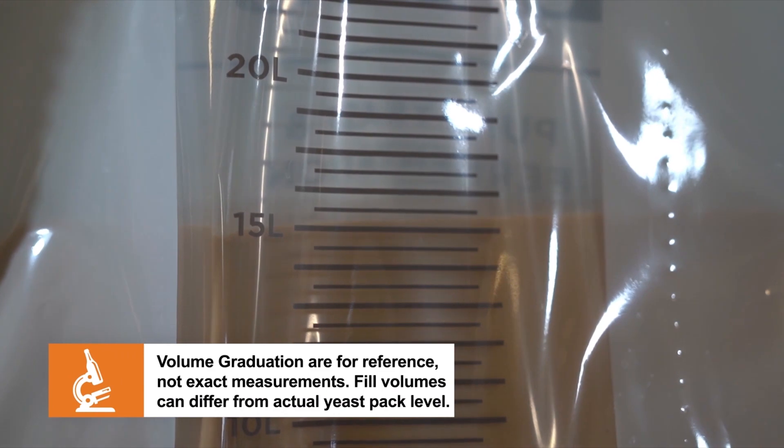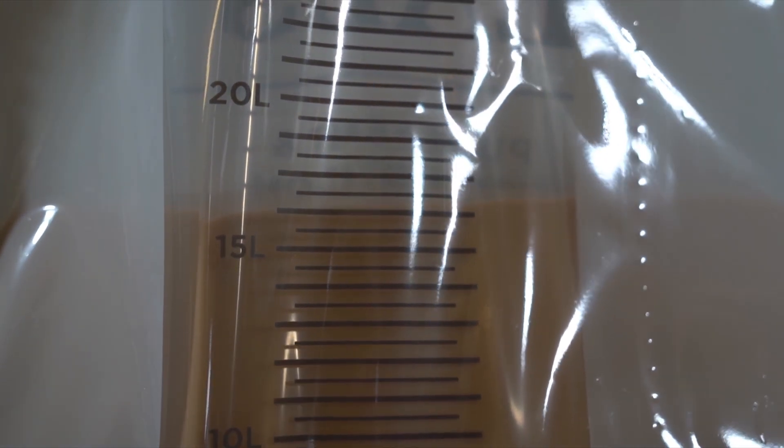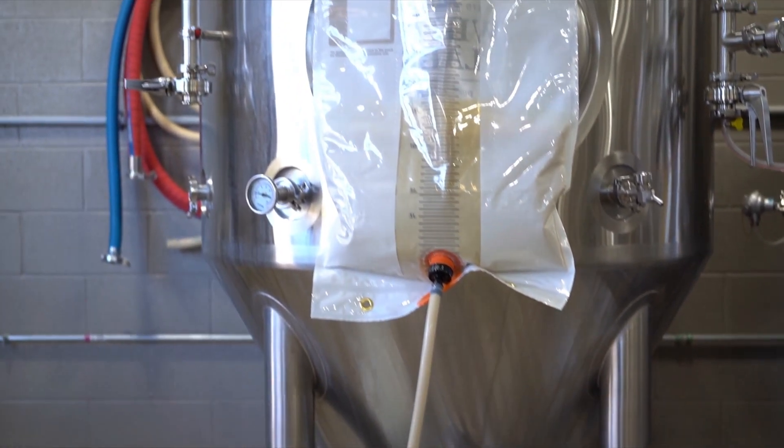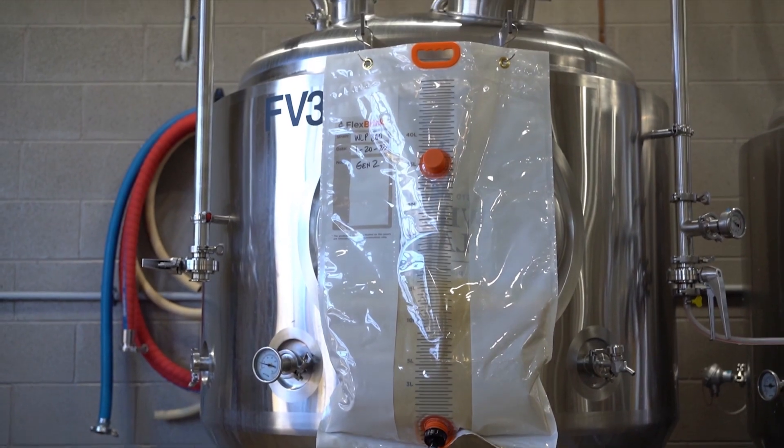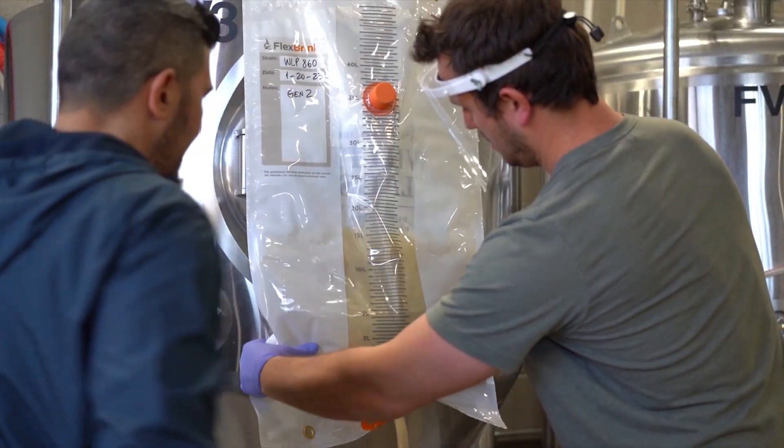The volume graduation in the Flexbrink is intended as a guide, not as an exact measurement. If carbon dioxide is in solution during harvest, the volume may appear higher than the actual volume of liquid. We recommend confirming harvest volume via weight for more precise measurement.